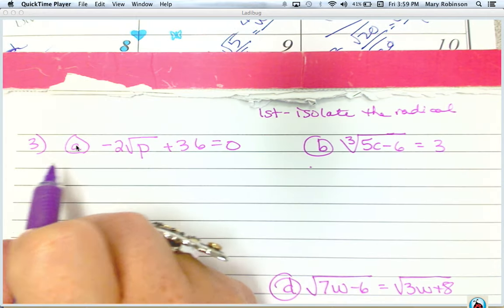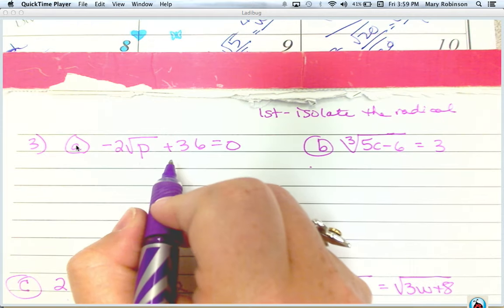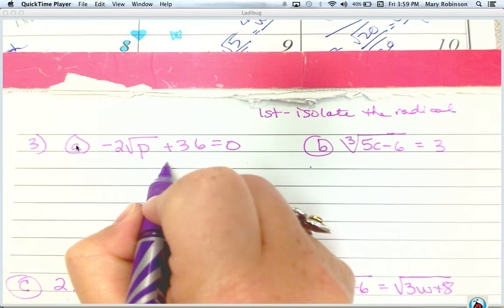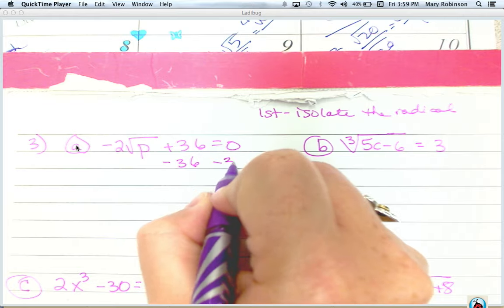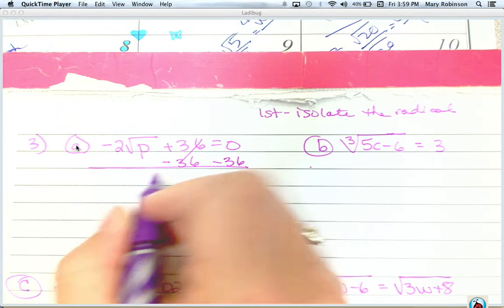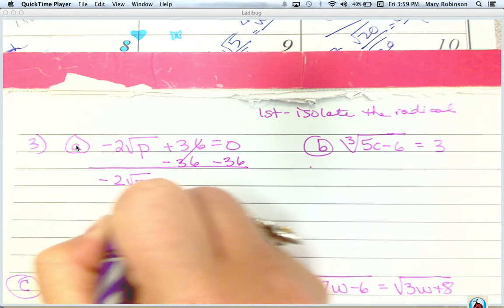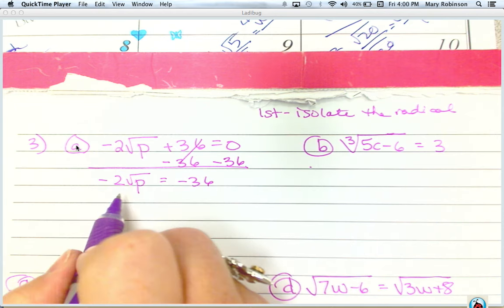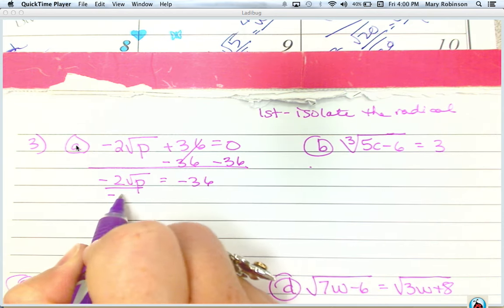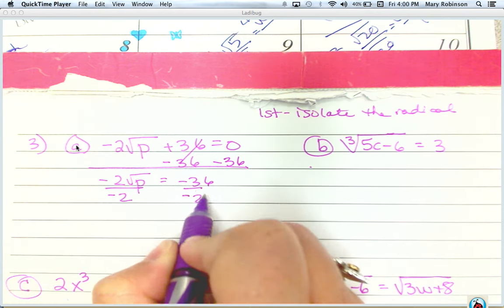So for 3a, the first thing we have to do is isolate this square root of p by undoing this addition, by subtracting 36 from both sides. And then it's still not isolated, it's being multiplied by negative 2, so we need to divide by negative 2.